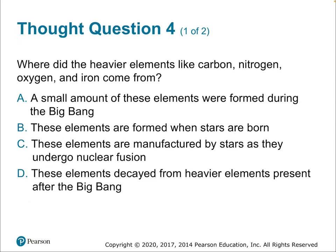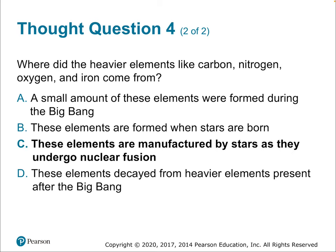Where did heavier elements like carbon, nitrogen, oxygen, and iron come from? They are elements manufactured by stars — a byproduct of nuclear fusion occurring in stellar cores. They were not created in the Big Bang. The heaviest elements, like gold and uranium, could only have formed through incredibly rare events like the collisions of neutron stars or even black holes.